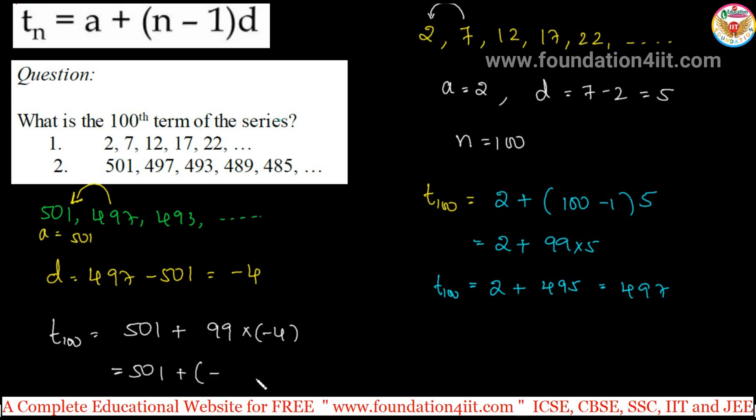Keep minus symbol, or else directly plus into minus is minus. 99 into 4: 4 into 9 is 36, 3, again 36, that's 396. 501 minus 396, that is 105.